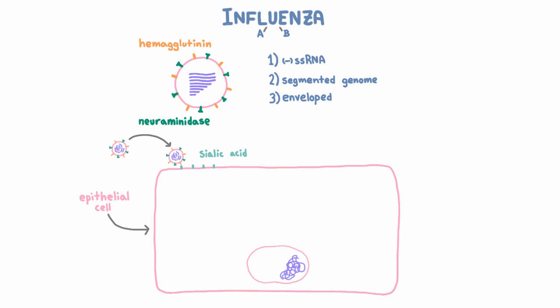What is this sialic acid? We're not going to talk about its function, but you should know that it's a molecule expressed on almost all human cells — and that actually includes red blood cells, which is where the name hemagglutinin comes from. Hemagglutinin makes heme, referring to blood, agglutinate or stick together.